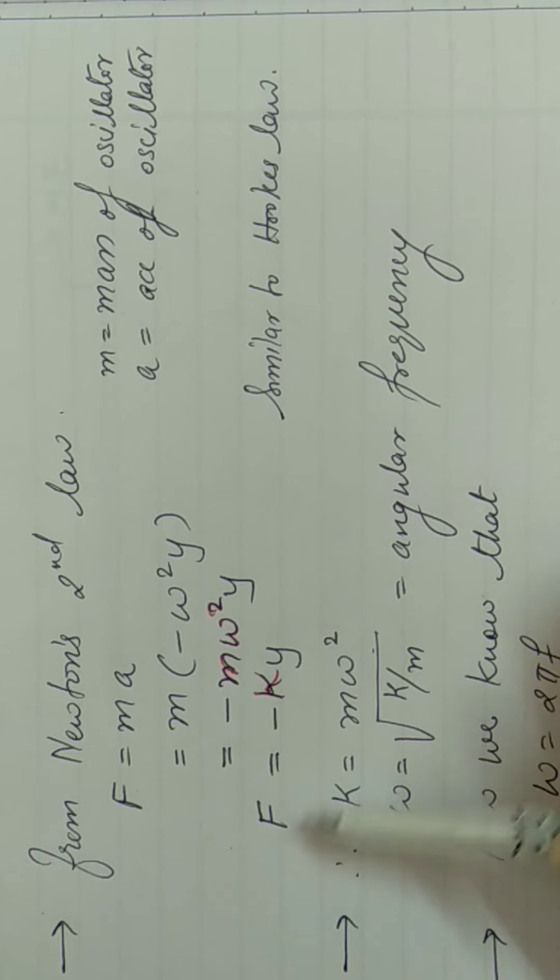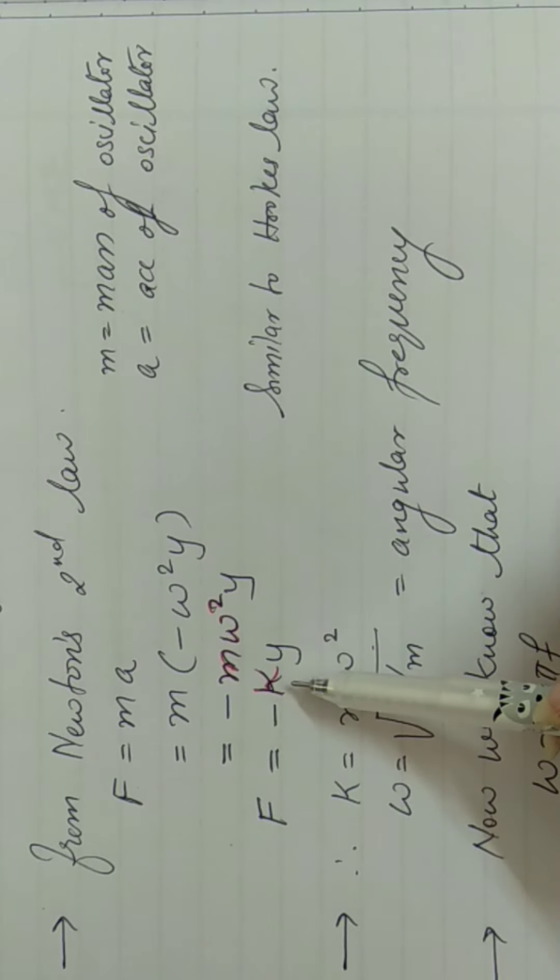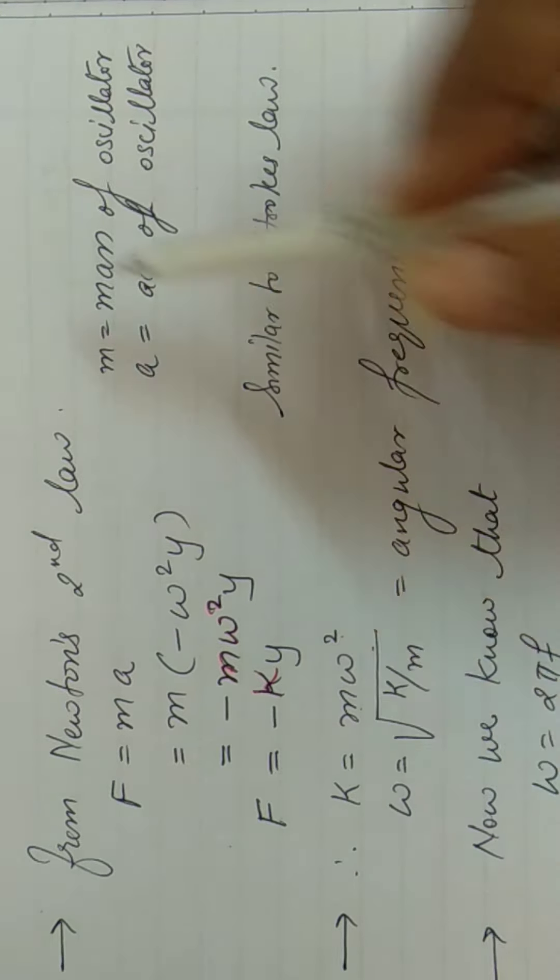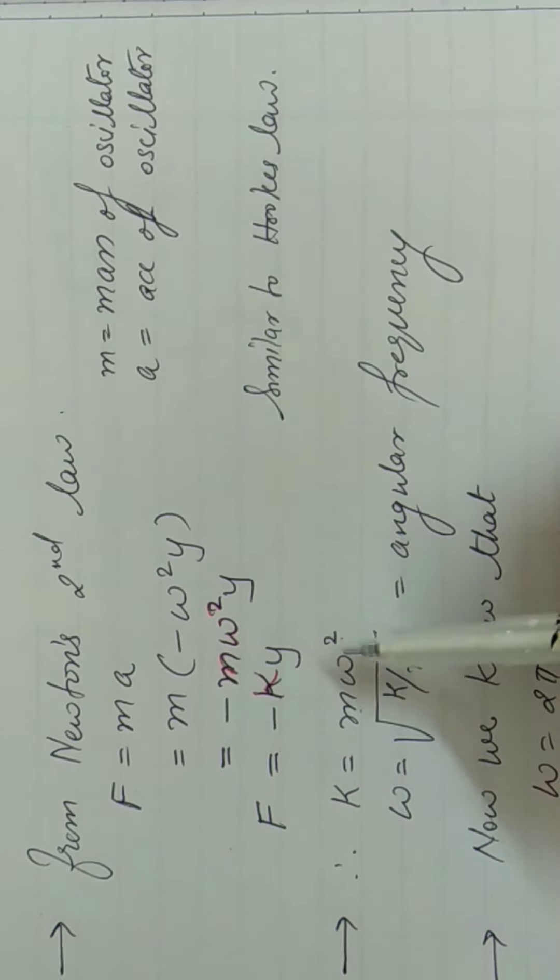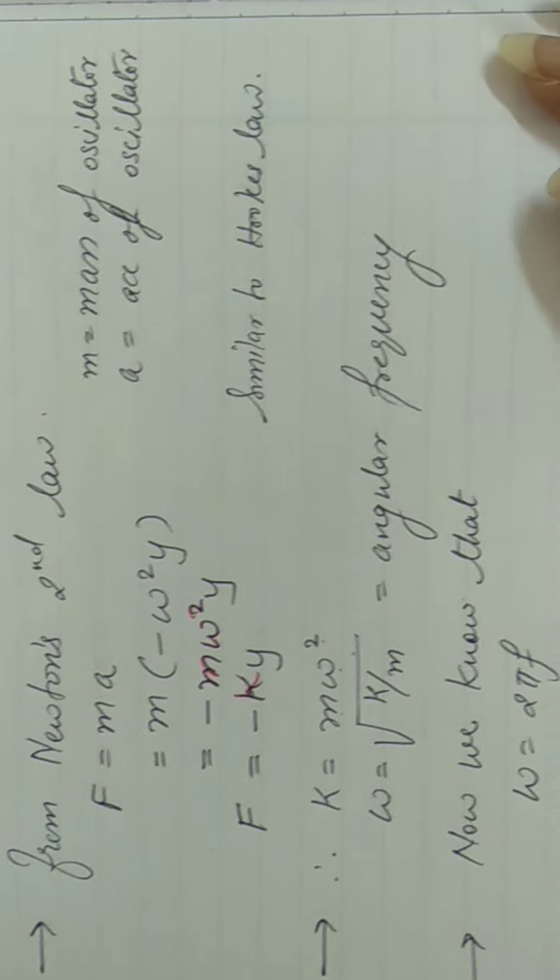Agar ham spring ke liye baat karte hai, toh is spring constant bolte hai, ya force constant bhi bol sakti hai. Toh force constant ki value mil jati hai M omega square, jis mein M tha mass of oscillator and omega is angular frequency of the oscillations.